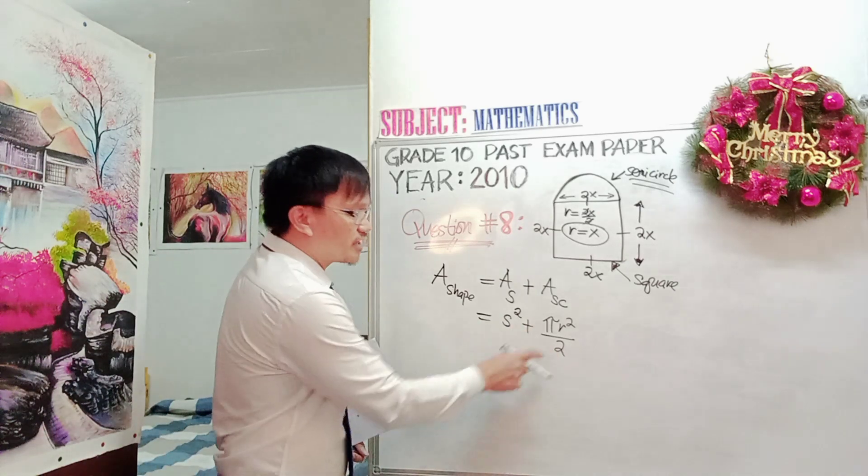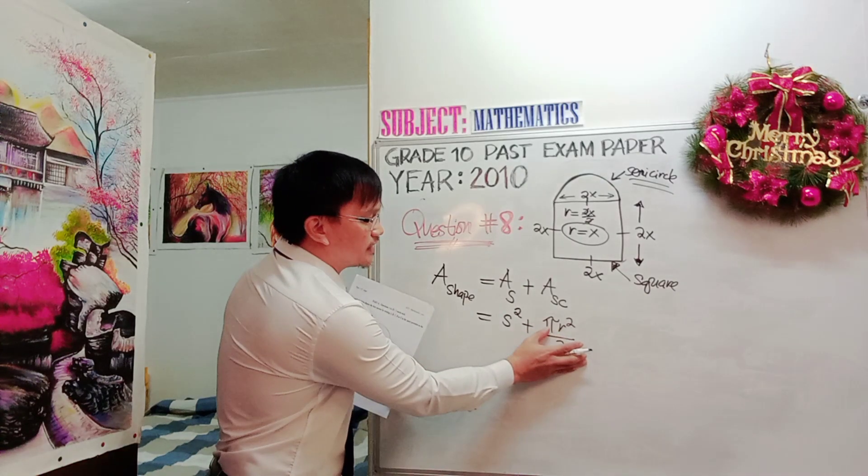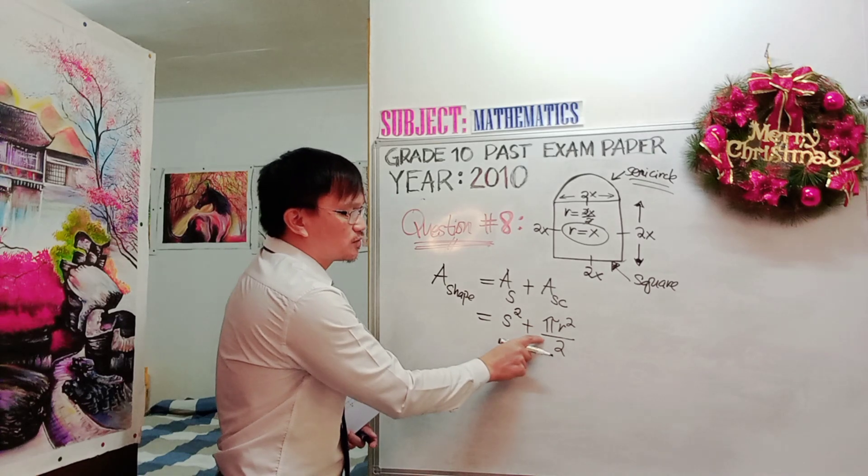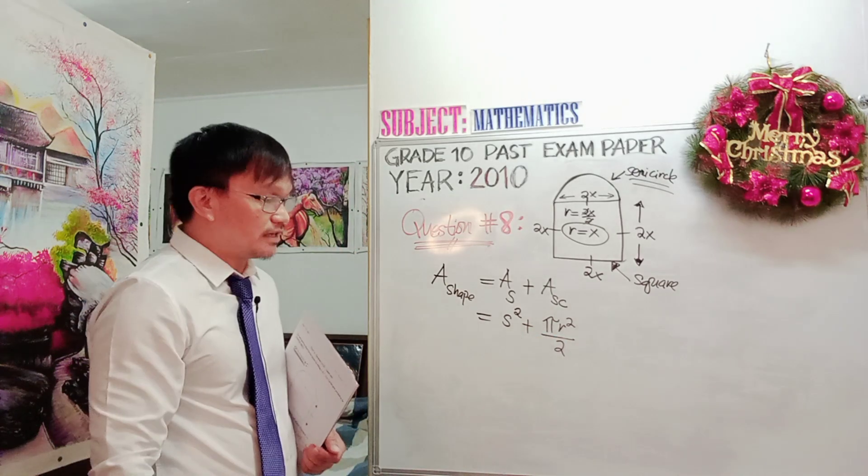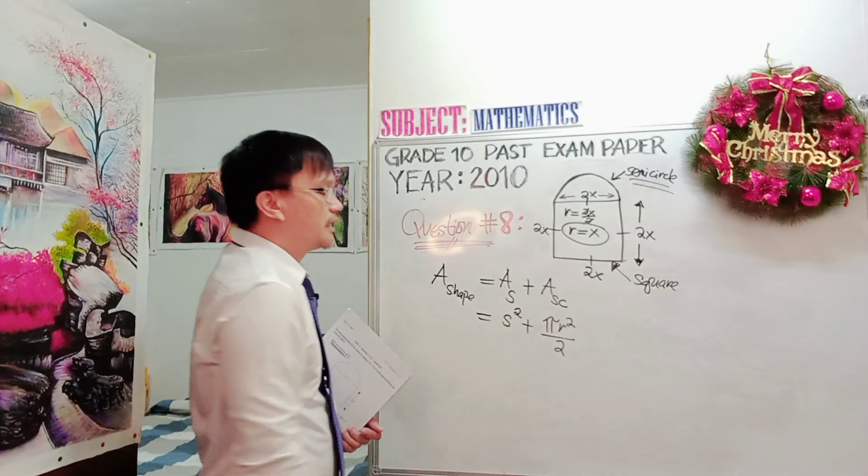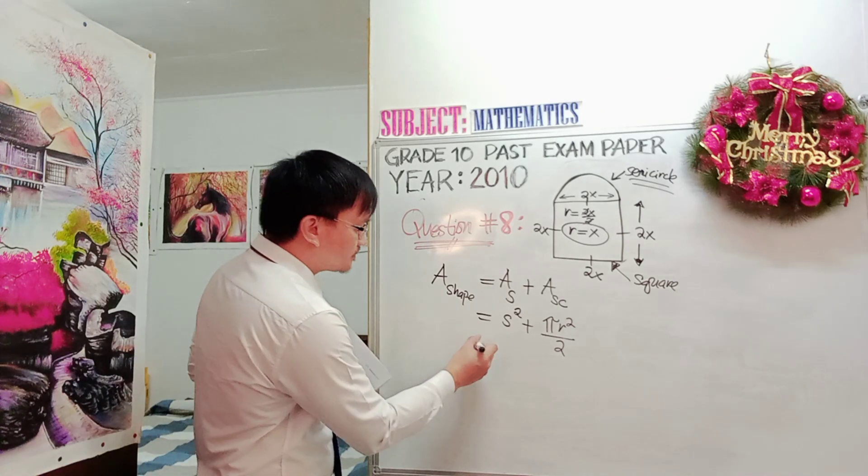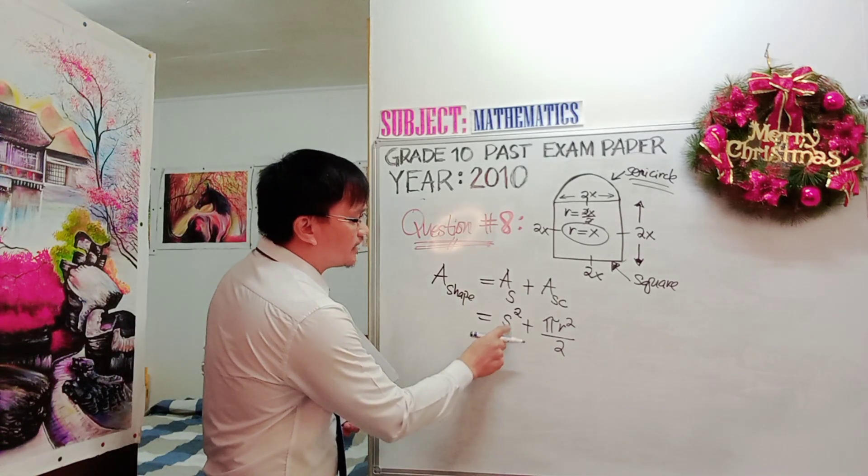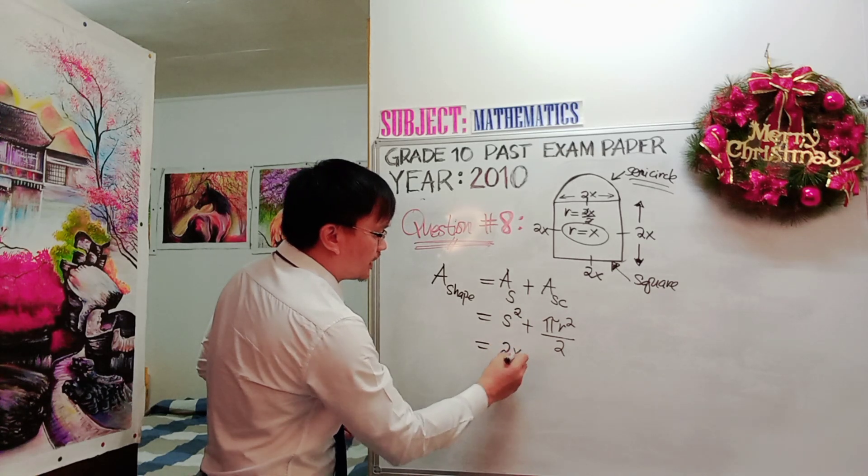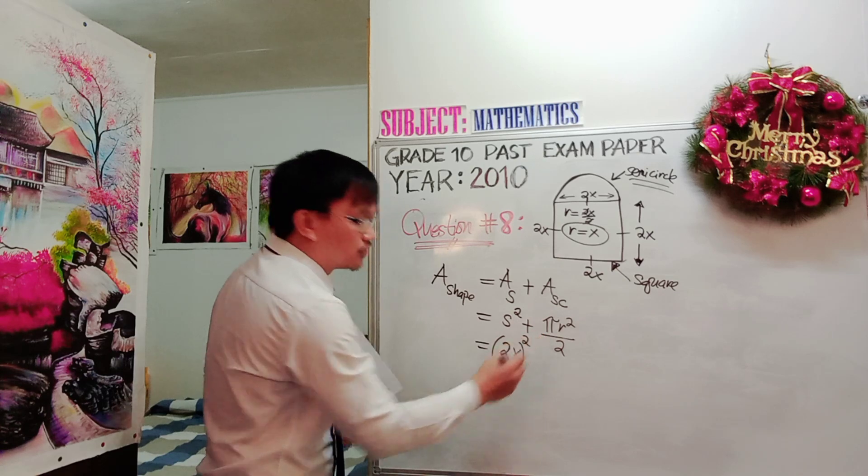Why it is divided by 2 is because the area of the circle is pi r square, but because it is a semicircle, that's why we have divided by 2, or half of the circle is one half pi r square. The side of the square is 2x, so that would be 2x in brackets to the power of 2.